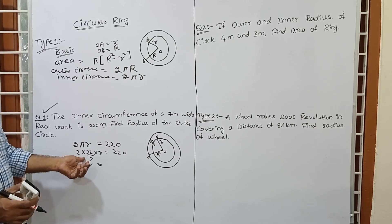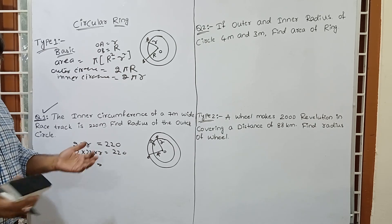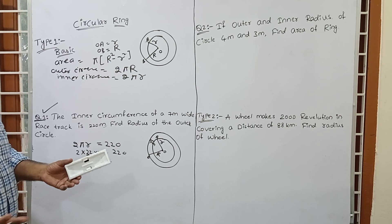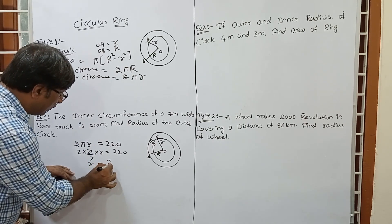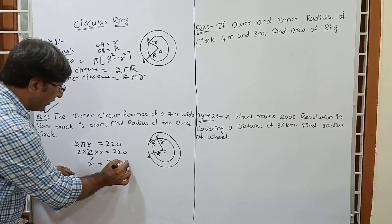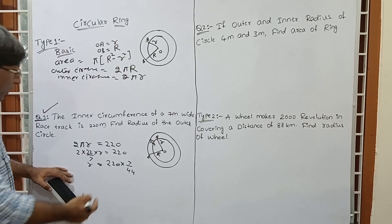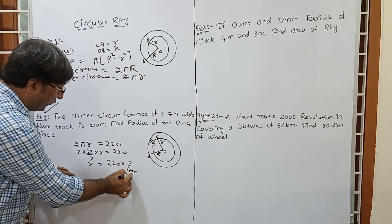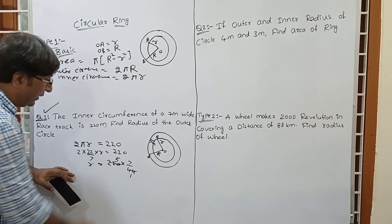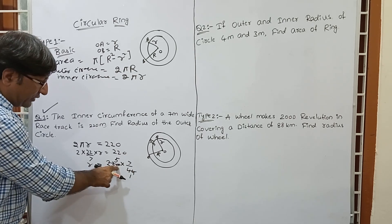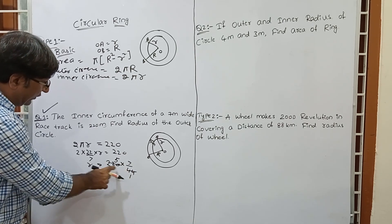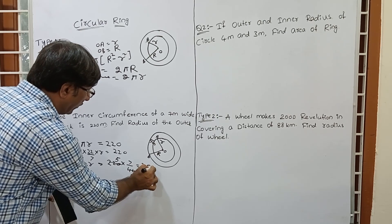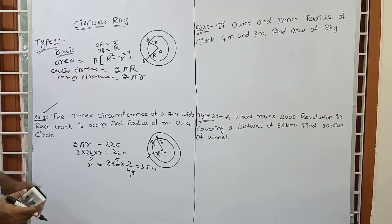So 2 into 22 by 7 equals 44 by 7, and this equals 220. When 44 by 7 goes to the RHS it becomes reciprocal. So r equals 220 multiplied by 7 upon 44. Cancelling: 220 divided by 44 gives 5, and 5 into 7 gives 35. So r equals 35 metres.